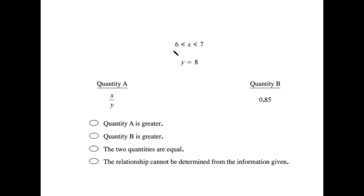So we're told that x is strictly between 6 and 7, and y is equal to 8. We want to know what's greater, x over y, or 0.85.